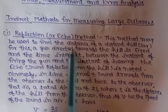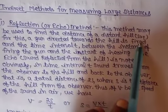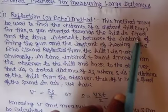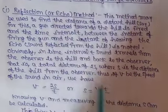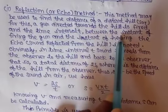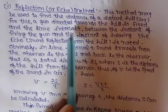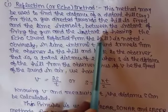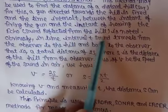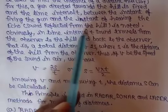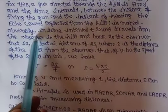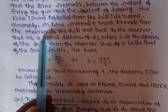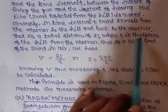This method may be used to find the distance of a distant hill. A gun directed towards the hill is fired, and the time interval T between the instant of firing the gun and the instant of hearing the echo — the sound reflected from the hill — is noted.